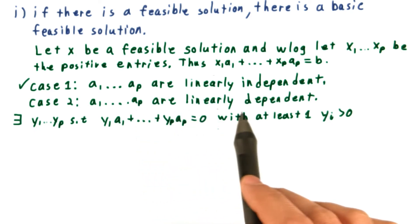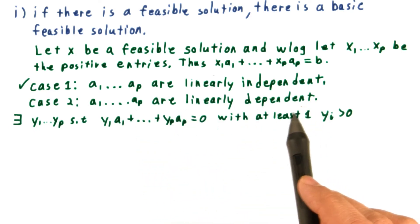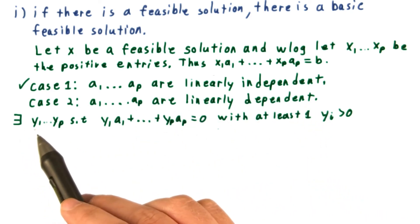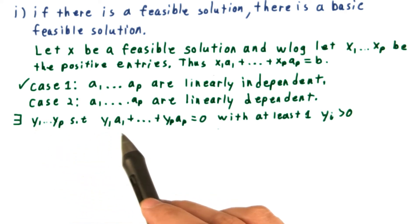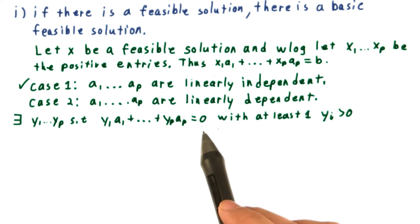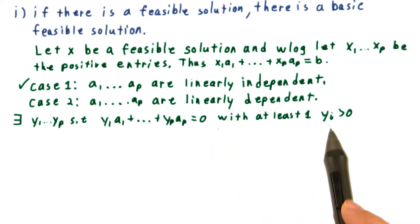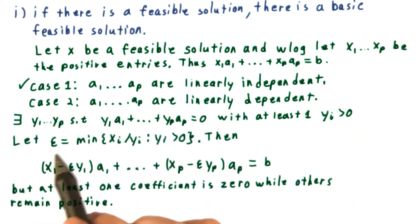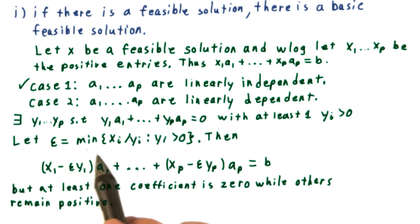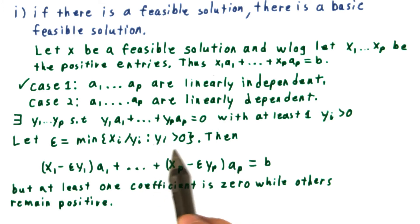Next, suppose that those columns are linearly dependent. Well, that means there are coefficients y1 through yp, such that this linear combination of the columns is equal to 0, with at least one of the coefficients, yi, positive. Then we're going to choose this parameter epsilon in a very clever way, so that it's the minimum of these ratios, xi by yi, among all these i's, such that yi is positive.